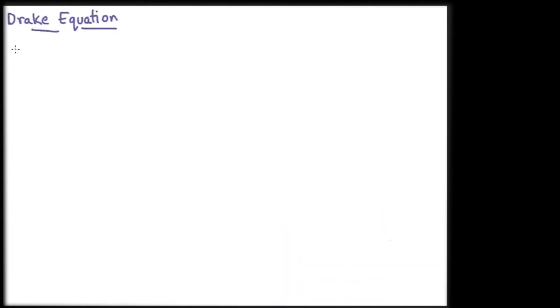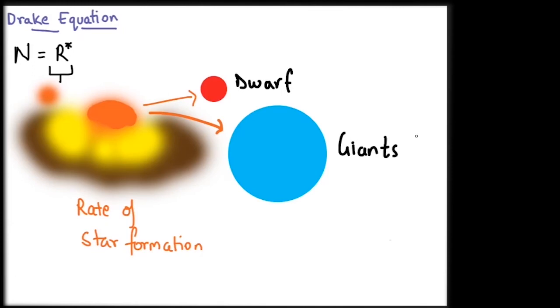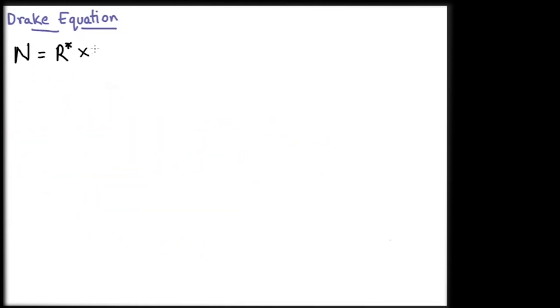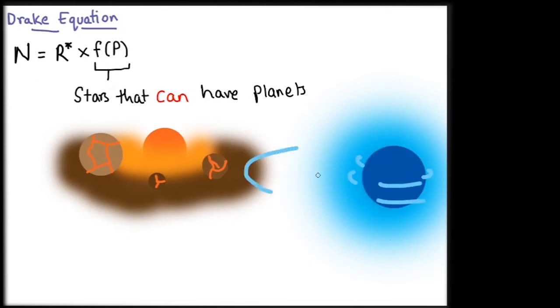The first term is R star, which is the rate of star formation. These stars can be of any category. The second term is F of P, which is the fraction of these stars that can have planets. It depends on the environment of stars. Not every star survives the cruel environment with other stars trying to steal its material during the formation process. Some stars that do form are not able to form planets because of forces of other stars and objects around it.